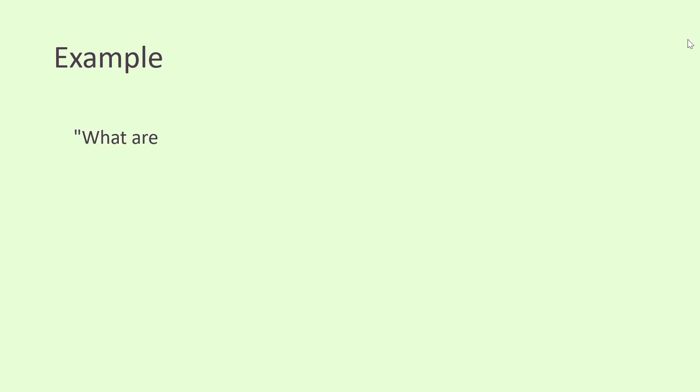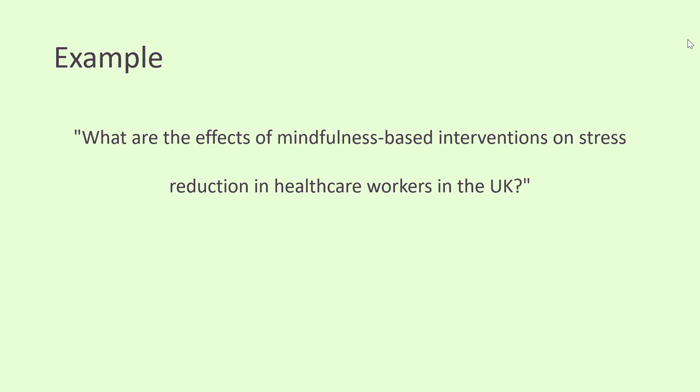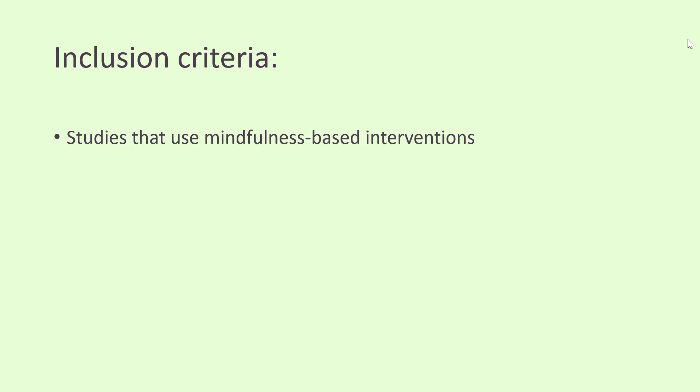Now we'll work through an example. I've chosen the question: what are the effects of mindfulness-based interventions on stress reduction in healthcare workers in the UK? We can think of some of our inclusion criteria — remember these are the characteristics or qualities that an individual study must possess in order to be included in your review. You might want to pause the video now and see if you can think of any. So if we think back to our question, we definitely want to find studies that include a mindfulness-based intervention, and we probably need to think about what that actually looks like as well.